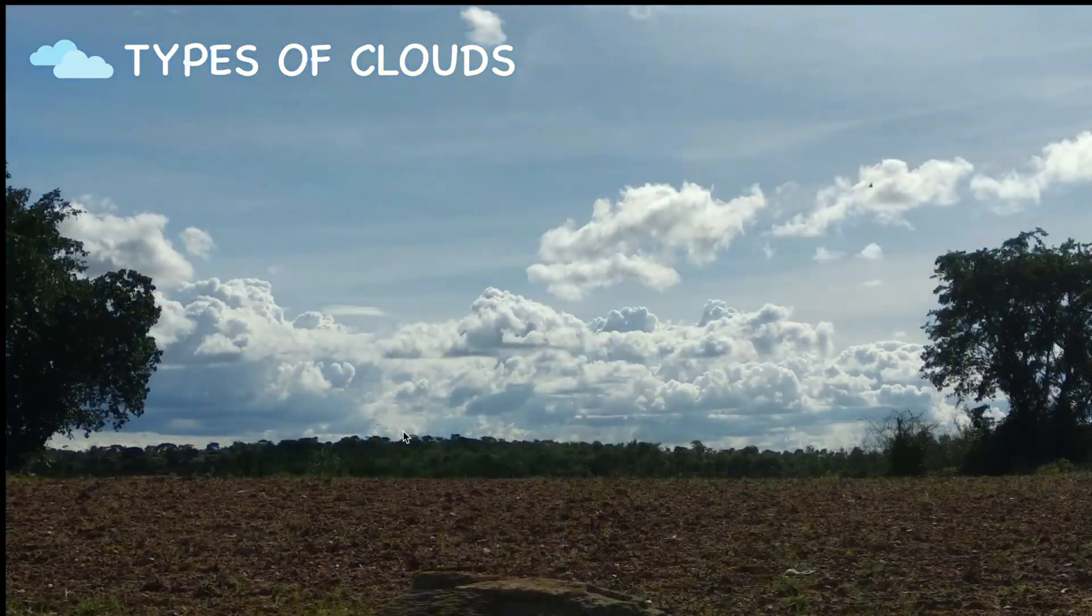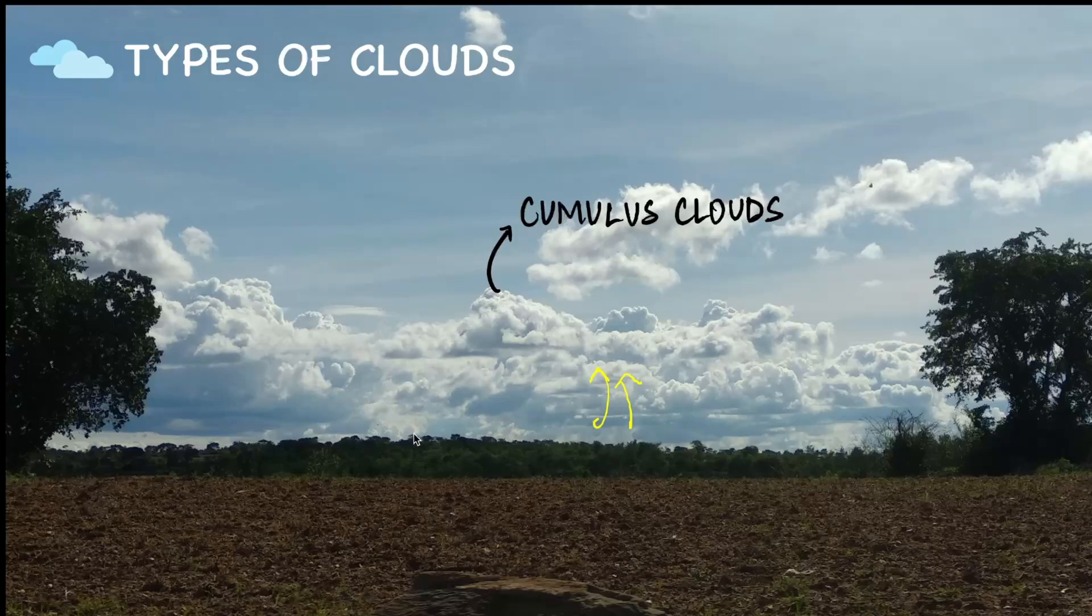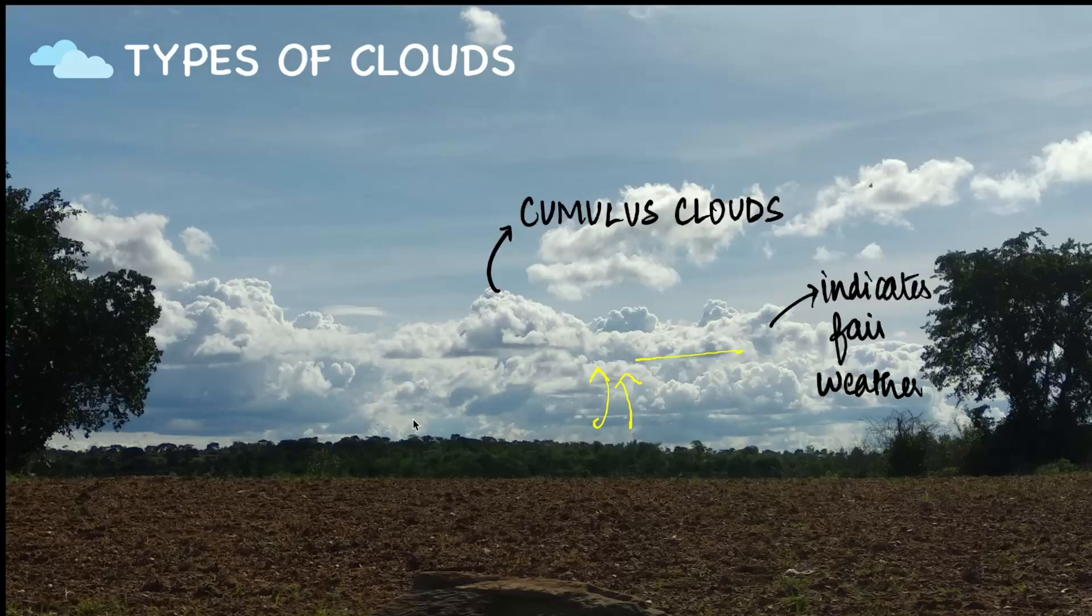But most often, when we draw clouds, we tend to draw it something like this. Now, these clouds that you see are cumulus clouds, which are fluffy, white and cotton-like with a flat base. Now, usually, we see that they tend to represent fair weather. But if they become bigger and bigger, they have a potential to become a cumulonimbus cloud.